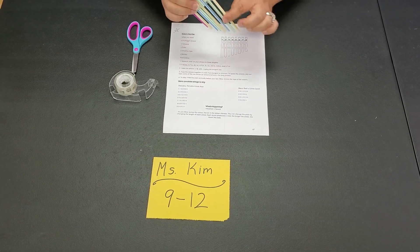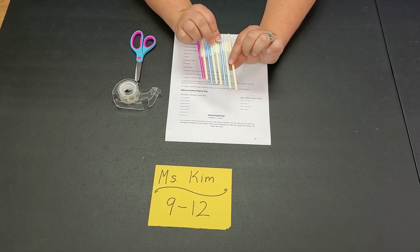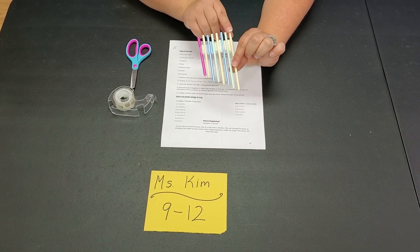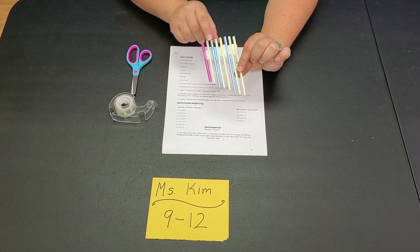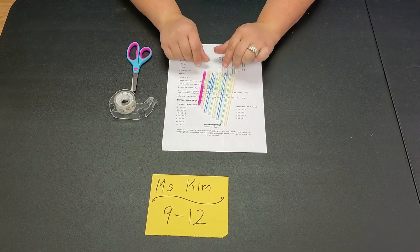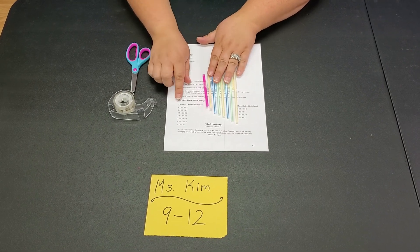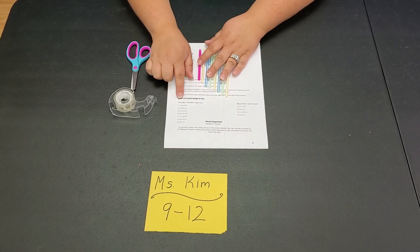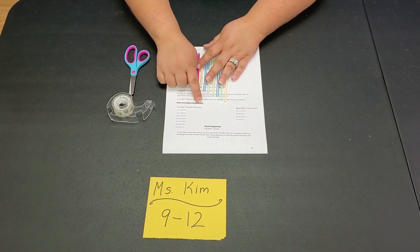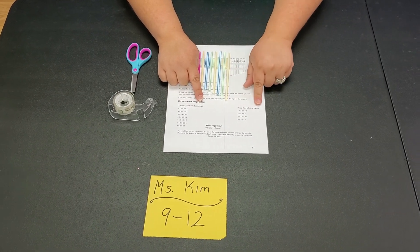But your longer piece will be number one and all the way down to I think I have like eight here. And so on this sheet it tells you how to play Twinkle Twinkle Little Star and Mary Had a Little Lamb.